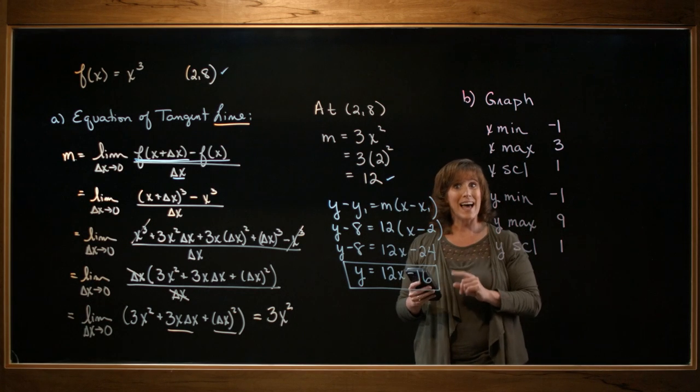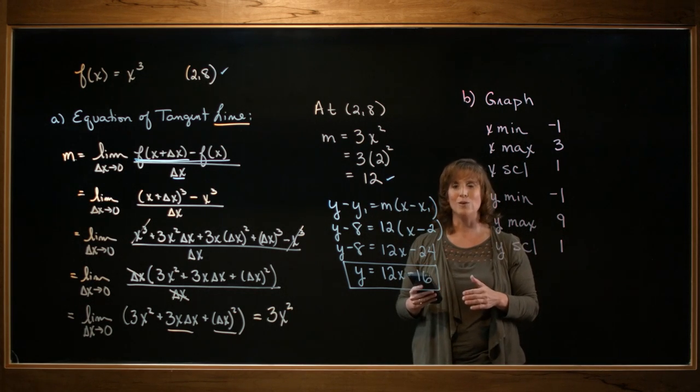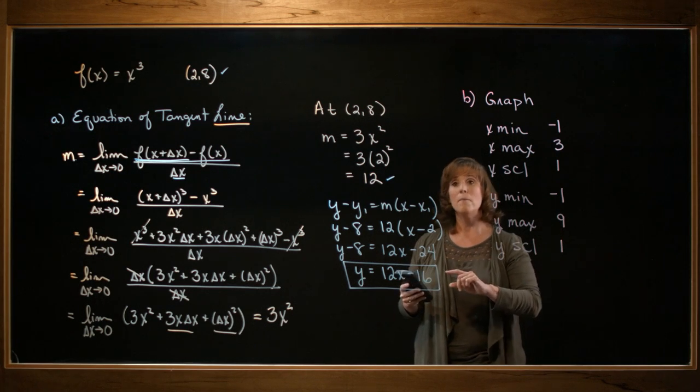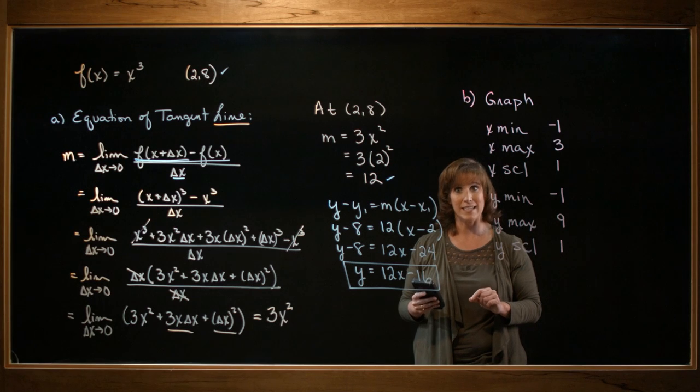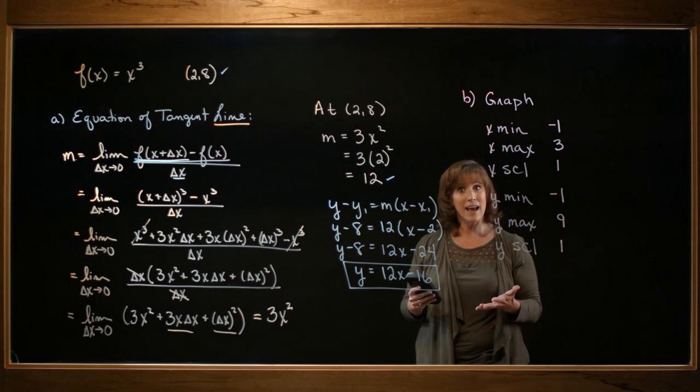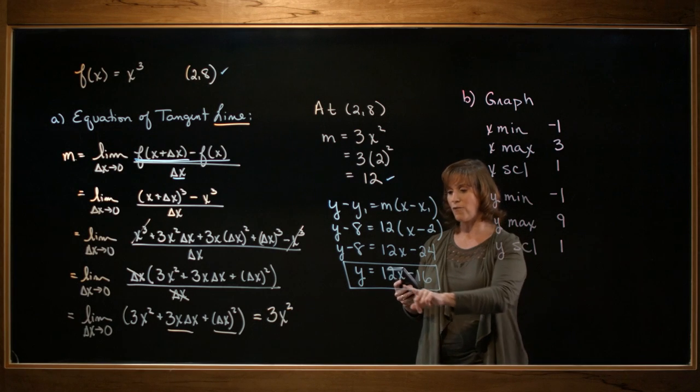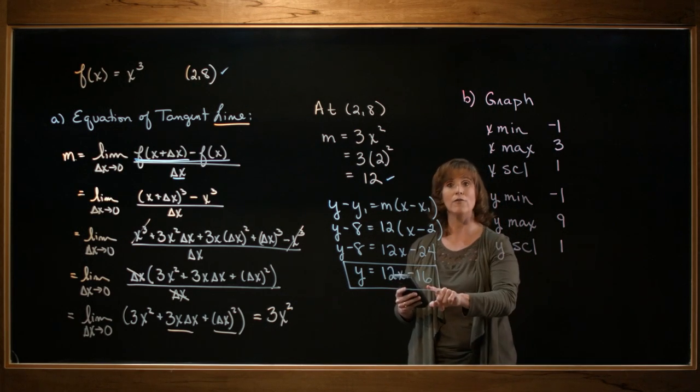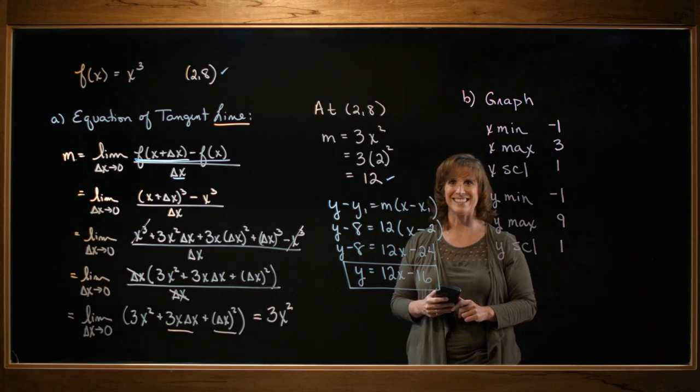Okay, one last thing. Some graphing utilities not only will show you a tangent line drawn, but it will also tell you what the slope and the y-intercept of that tangent line is. And if your calculator or graphing utility has that feature, then you can go ahead and verify that the slope was indeed 12 and the y-intercept was minus 16. I hope that helped. Thanks.